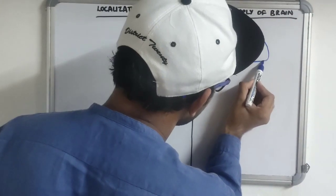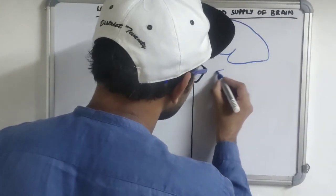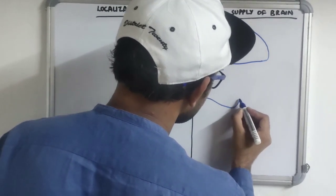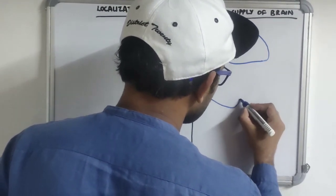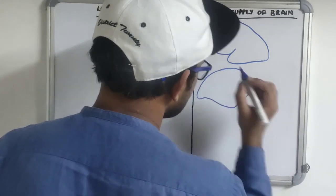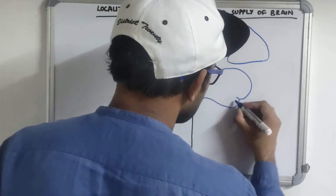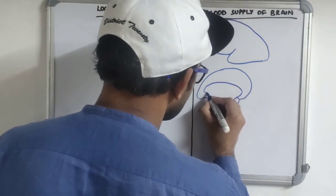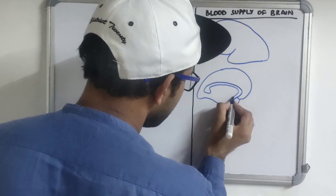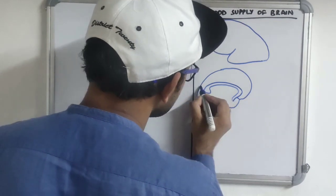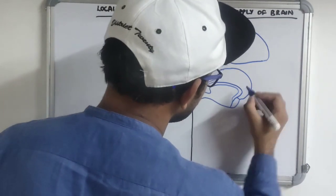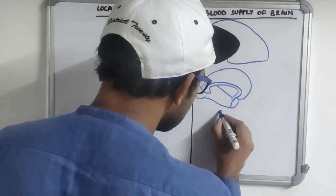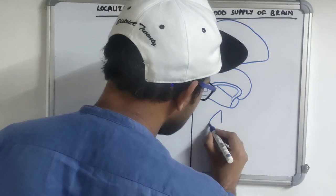This is the lateral surface of the cerebral hemisphere. This is the medial surface of the cerebral hemisphere. And this is the basal surface of the cerebral hemisphere.